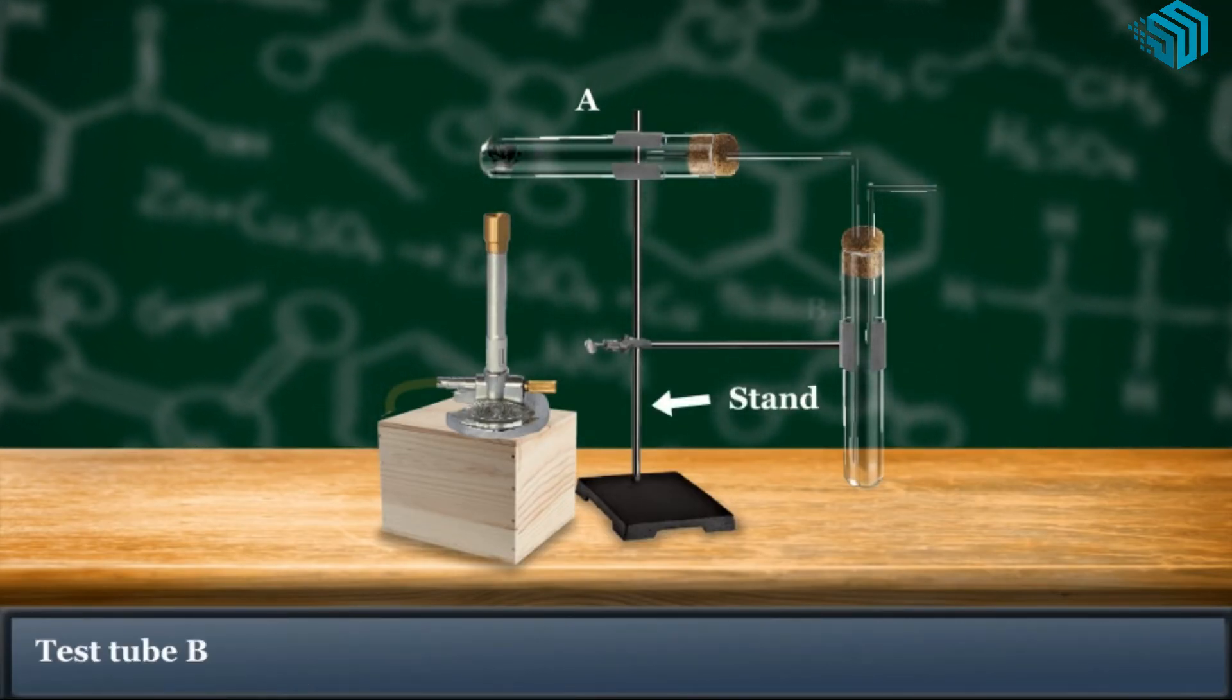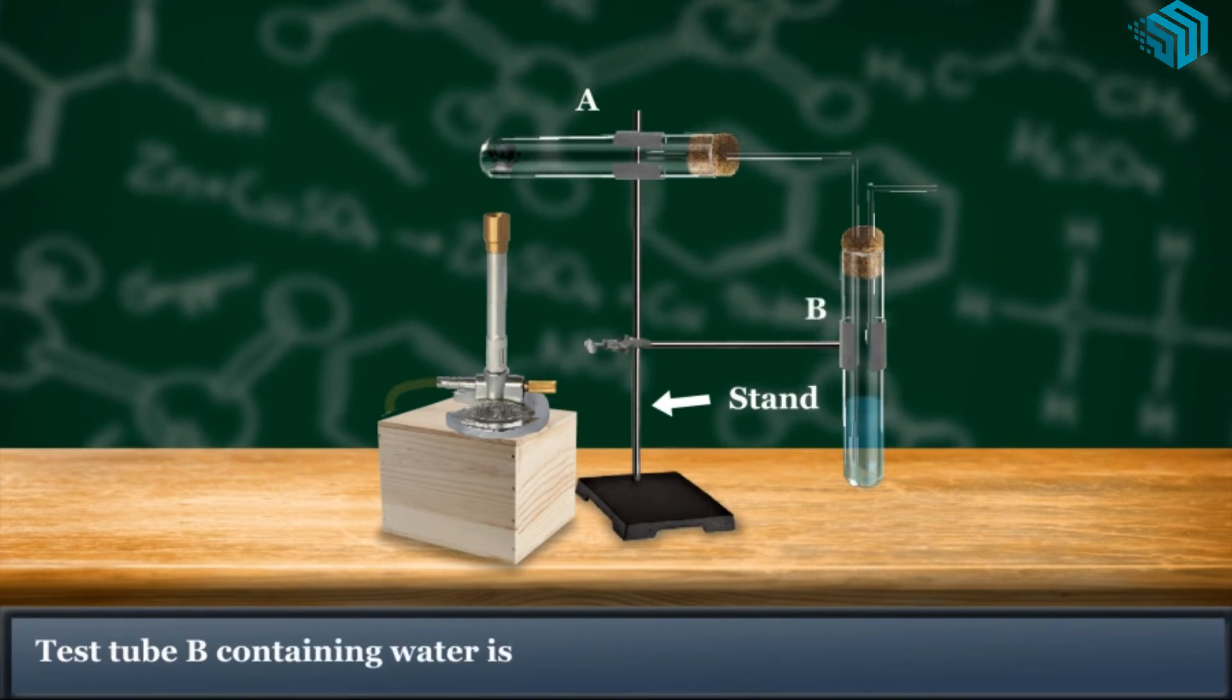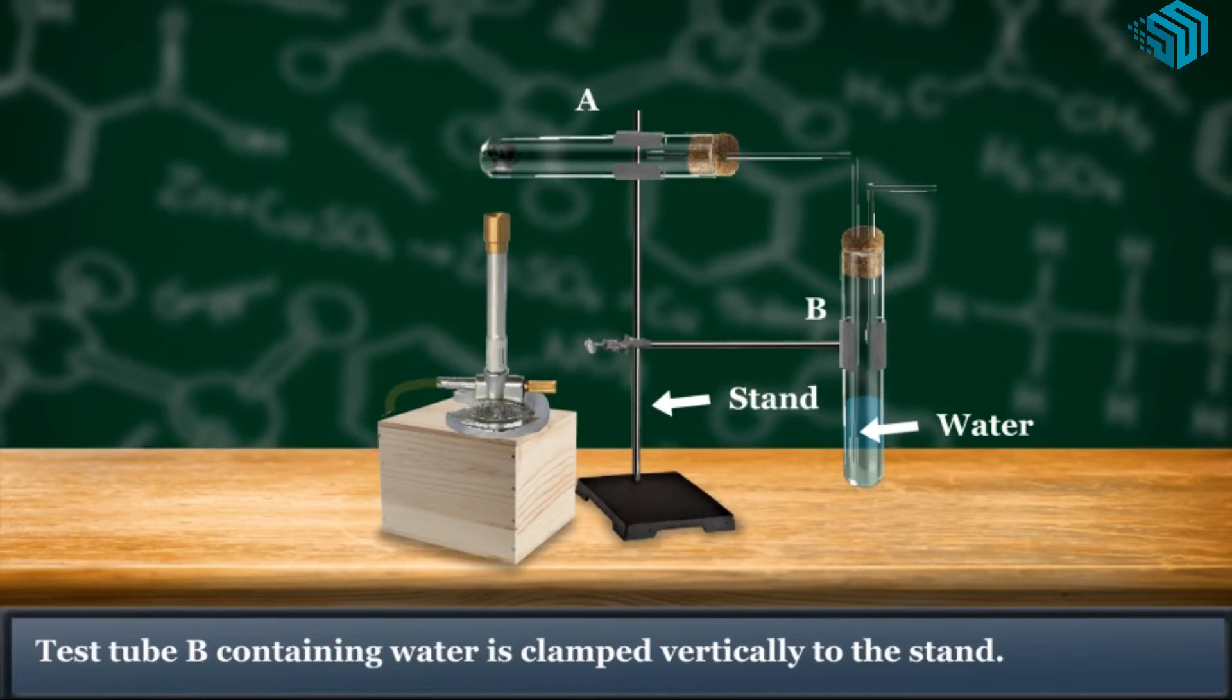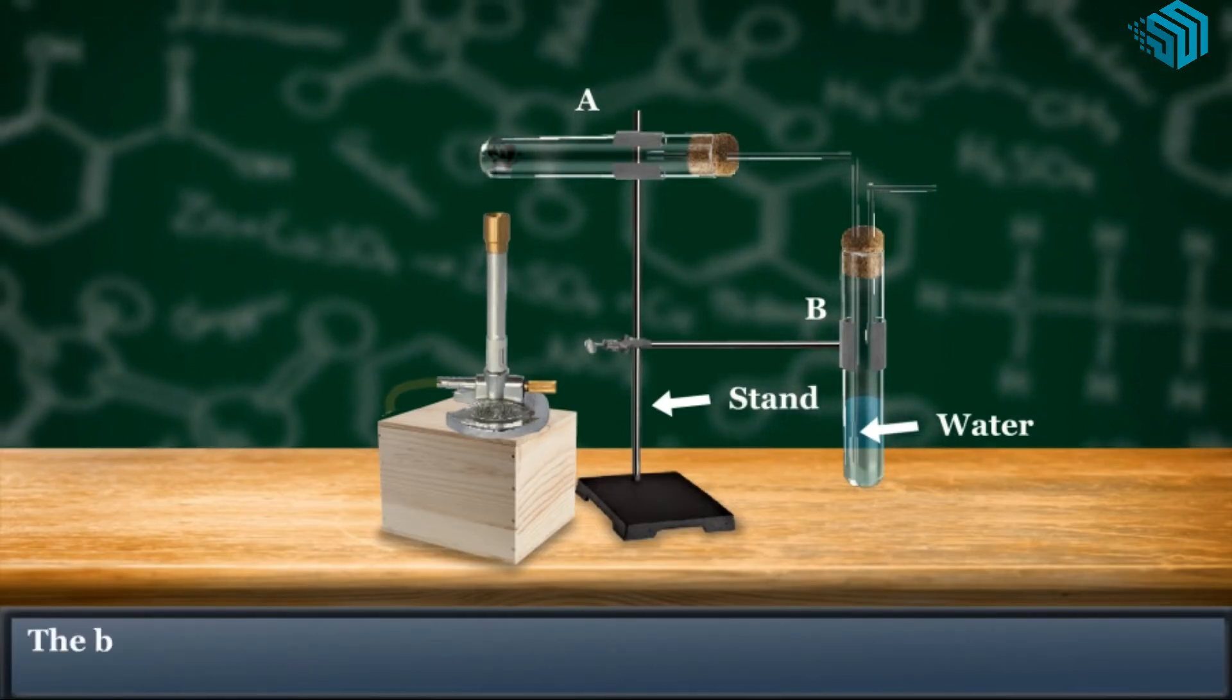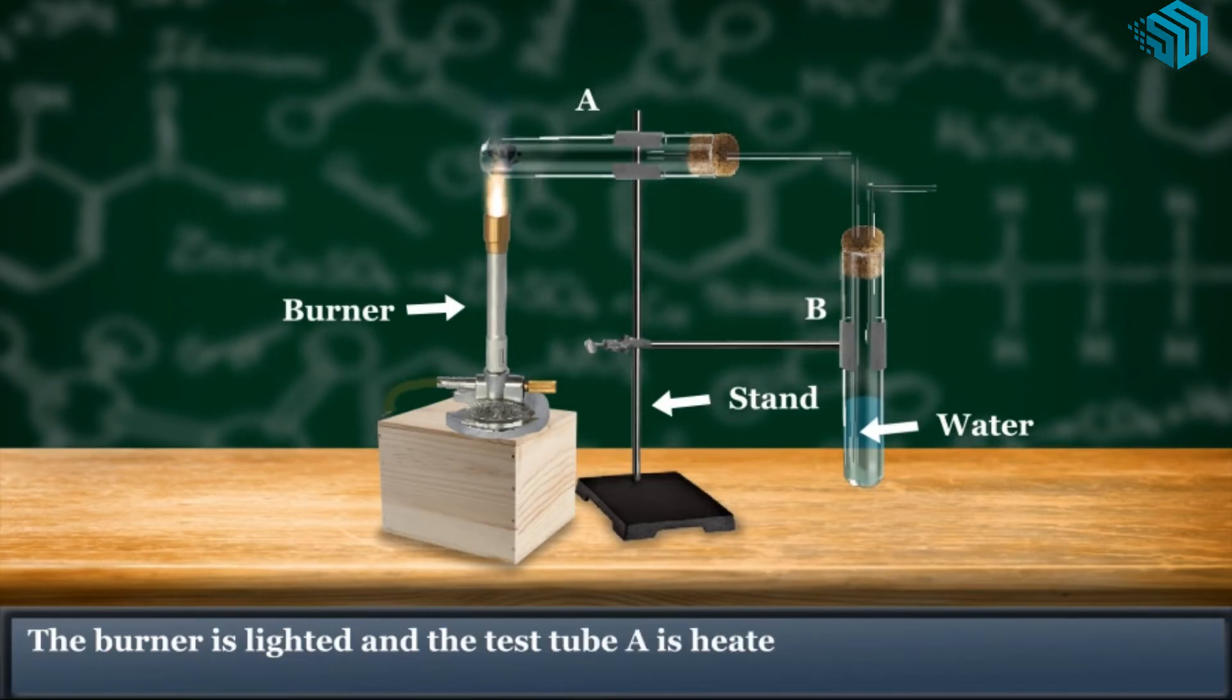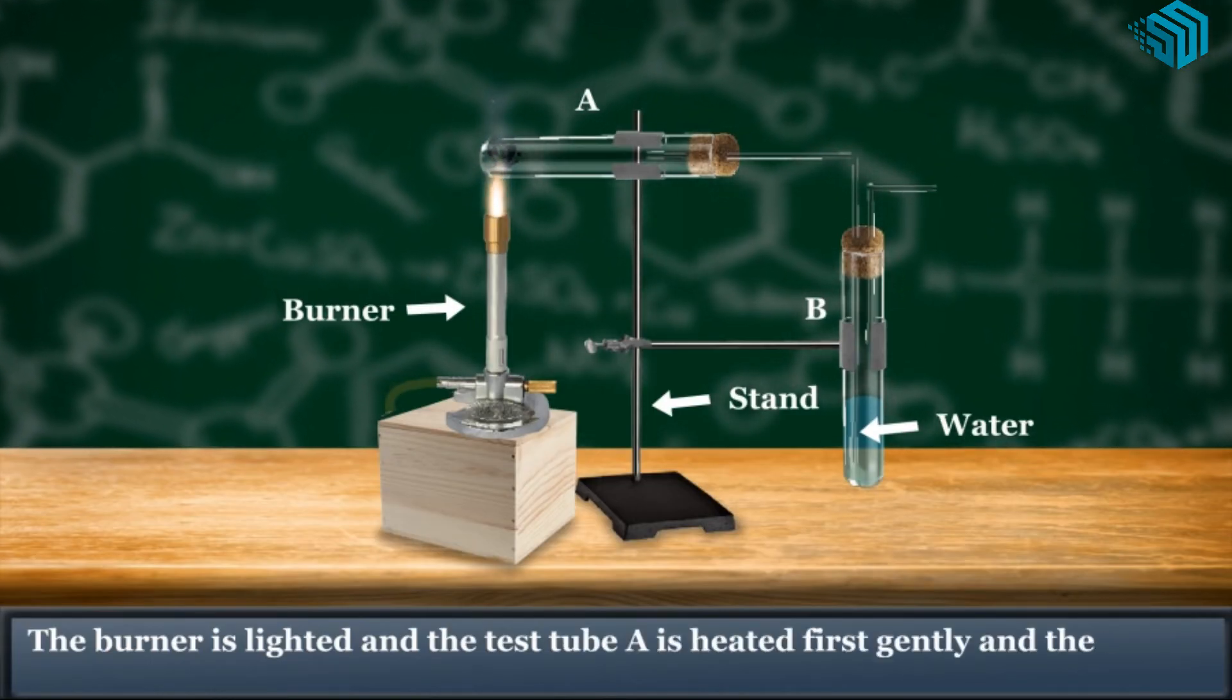Test tube B, containing water, is clamped vertically to the stand. The burner is lighted and the test tube A is heated first gently and then intensely.